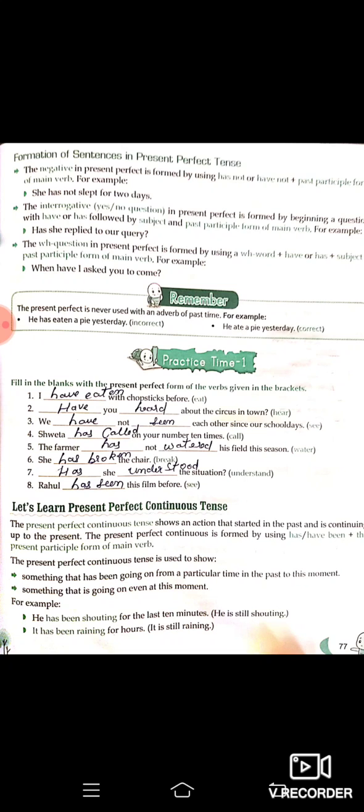Interrogative ke liye present perfect tense mein hum 'have' ya 'has' ka istemal pehle kar lete hain. Example: 'Has she replied to our query?' — kya usne hamari query ko reply kiya? Kya usne hamari problem ka reply kiya?